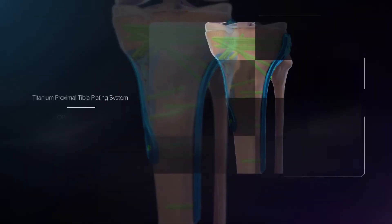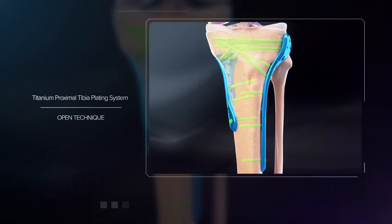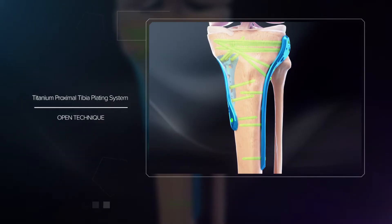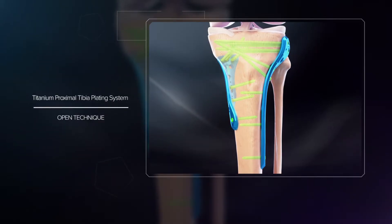The titanium proximal tibia system includes instruments for both open and percutaneous techniques. The open technique instruments can be used for both the posteromedial and lateral plates.